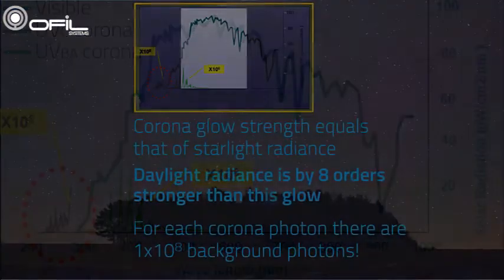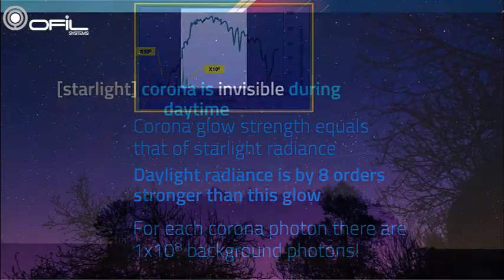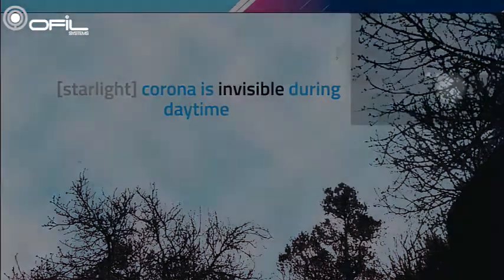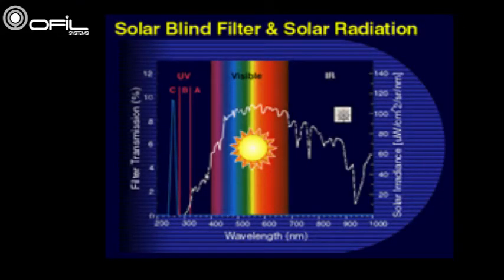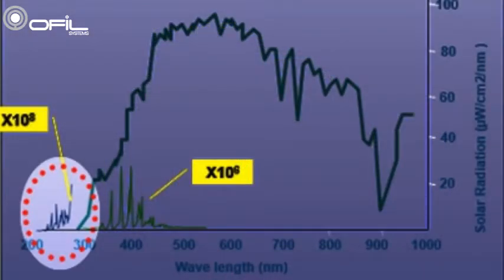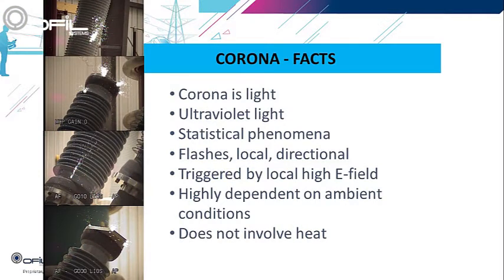The spectral range of corona PD lies between the solar blind UVC and the visible spectral range. The bright daylight radiance is eight orders stronger than that of corona glow and hinders seeing the faint corona PD. This is why corona is invisible during daytime. However, corona emits UV light in the solar blind zone — the dark zone where ozone blocks UV from the Sun — and the DayCor technology enables seeing this solar blind UV, thereby revealing corona.